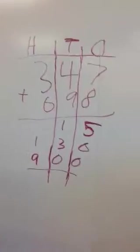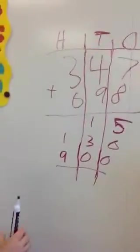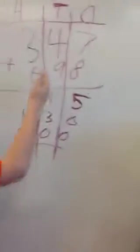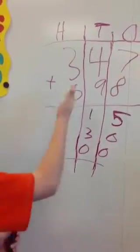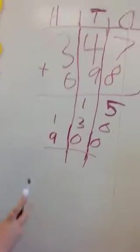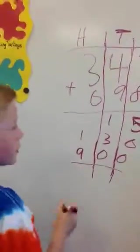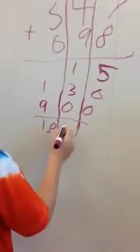And you have the problem, and then you add it. So 7 plus 8 would be 15. 40 plus 90 would be 130. And then 300 plus 600 would be 900. And if you add them all together, you would get 1,045.